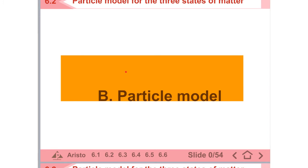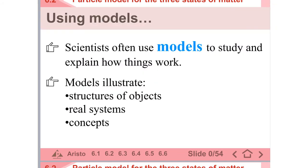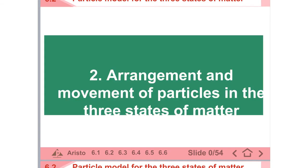We are going to look at models. Models in science. To sum up, you should know that for scientists, we often use models to study and explain how things work. Models can illustrate the structures of objects, the real and some abstract concepts. So let's look at the arrangement and movement of particles in the three states of matter in terms of the particle model.